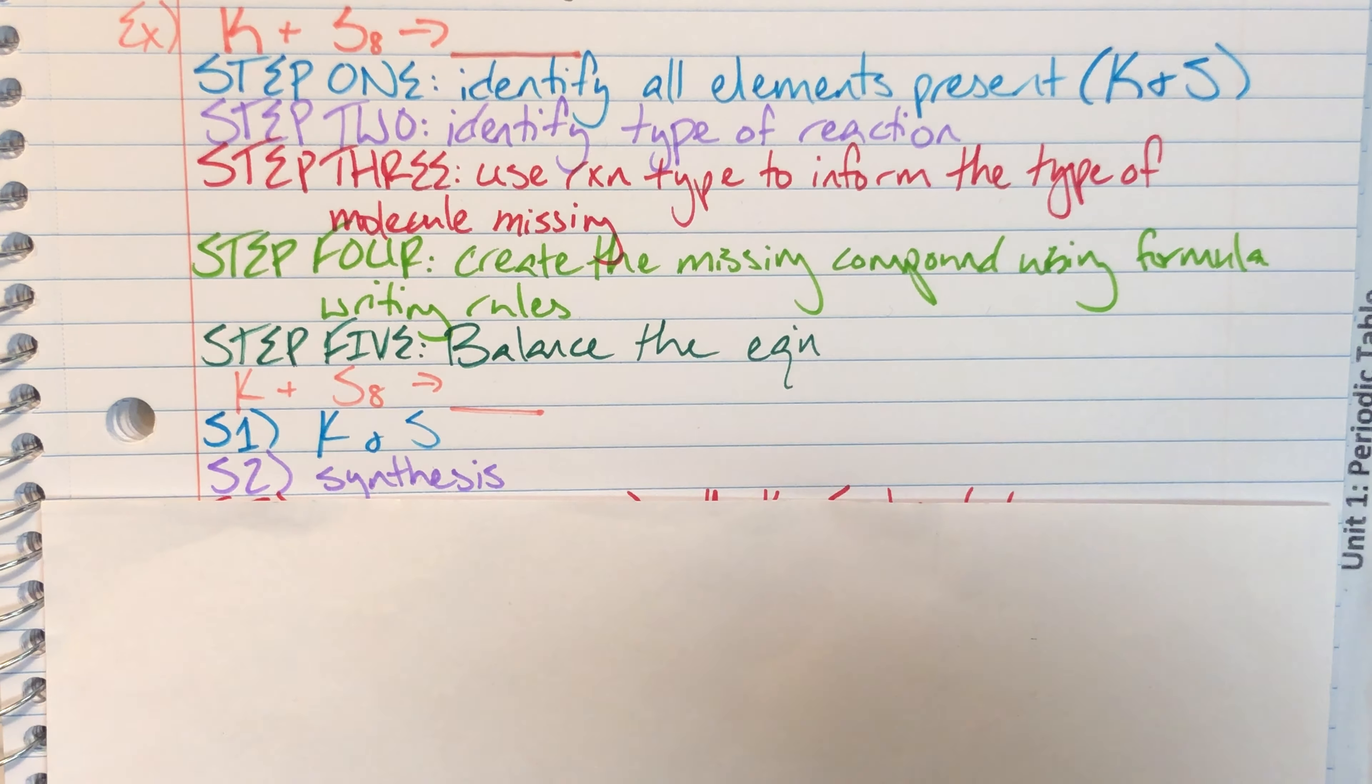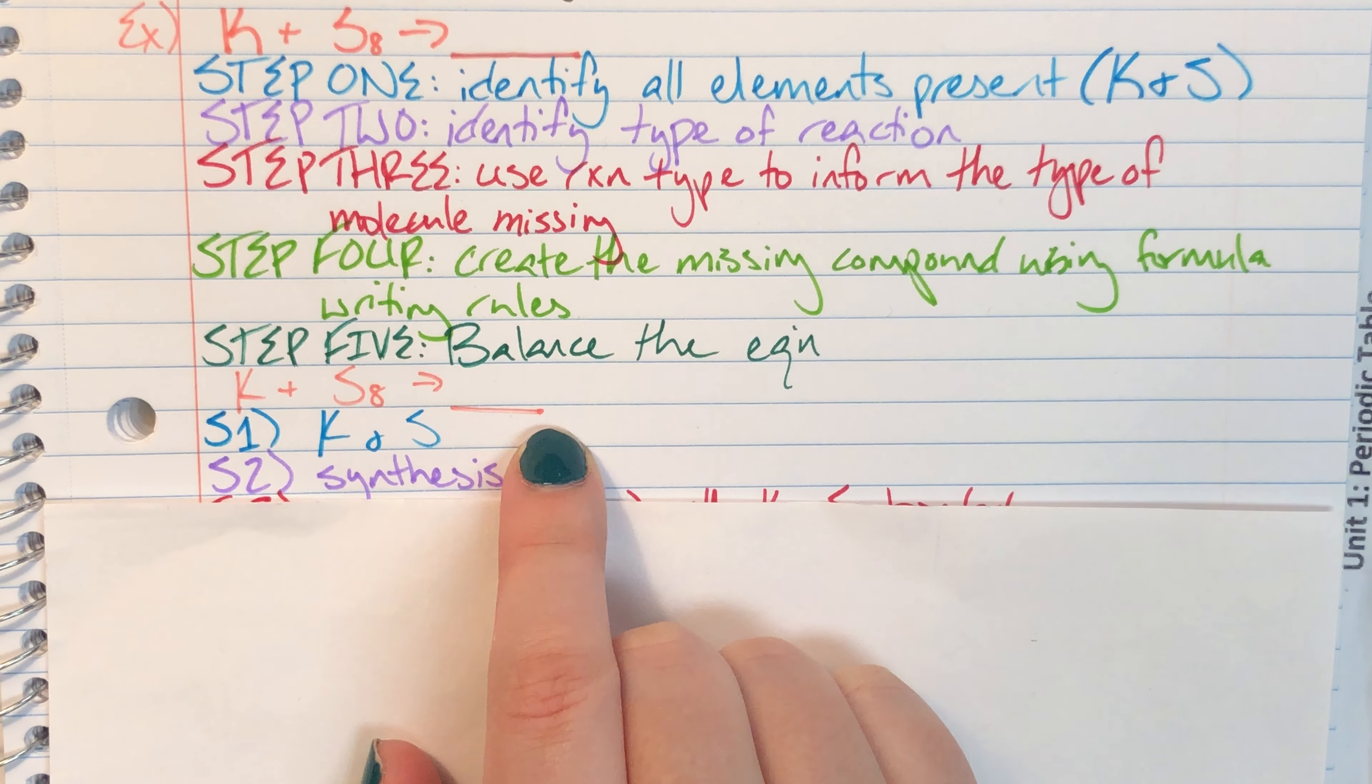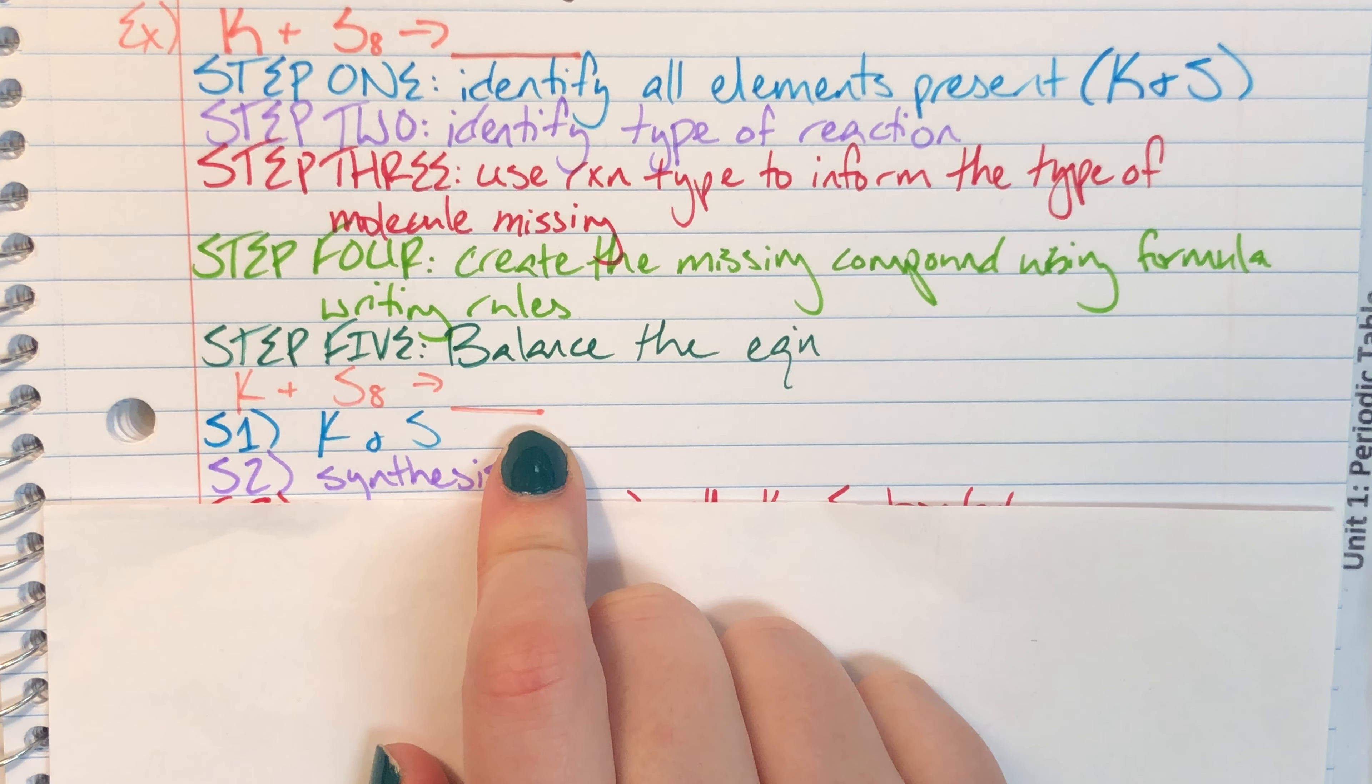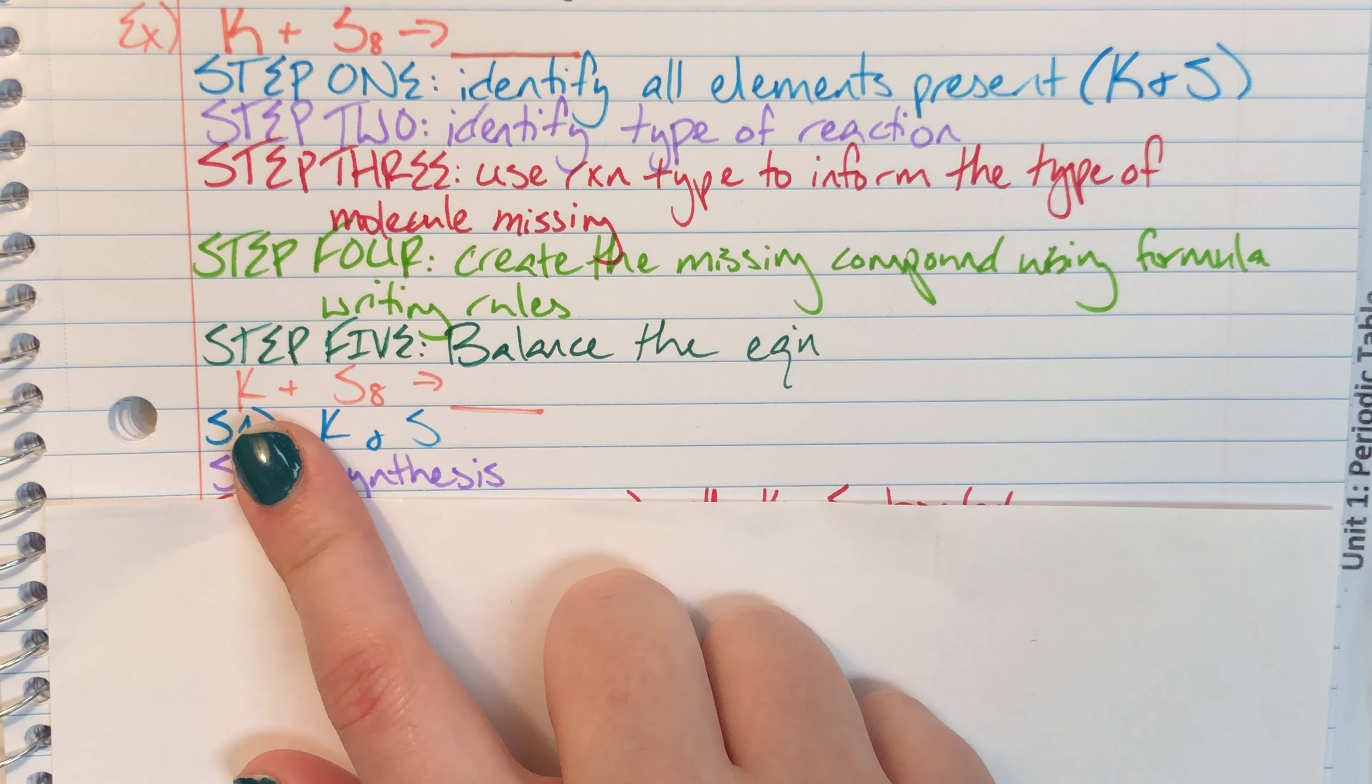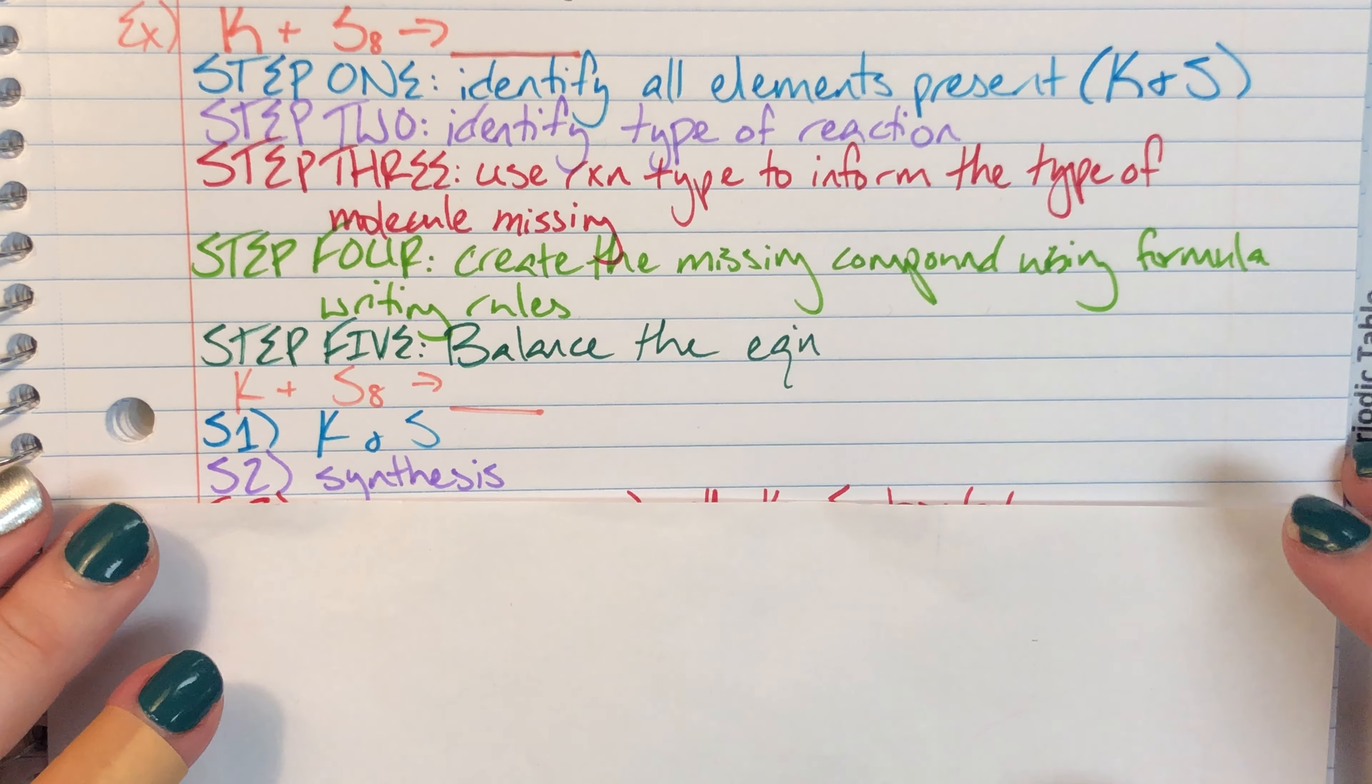And then I need to identify the type of reaction. And I've identified this as a synthesis reaction because I have two singular elements and then I only have one space identified for a product that could be made, which means I will go from element to molecule so that matches my synthesis pattern.